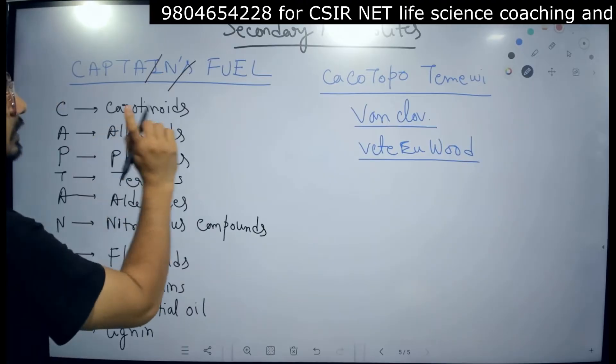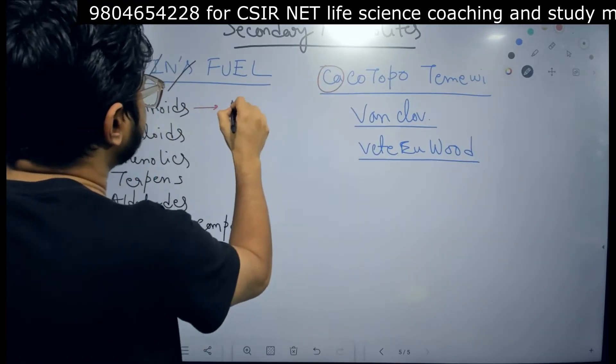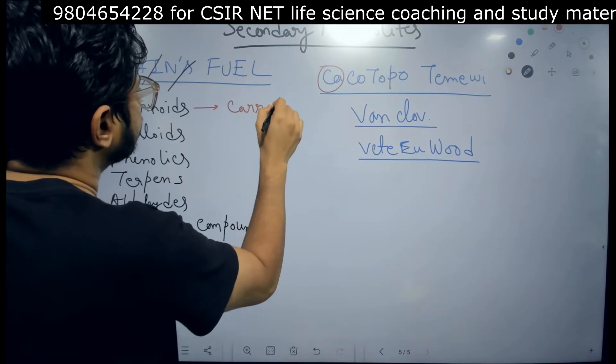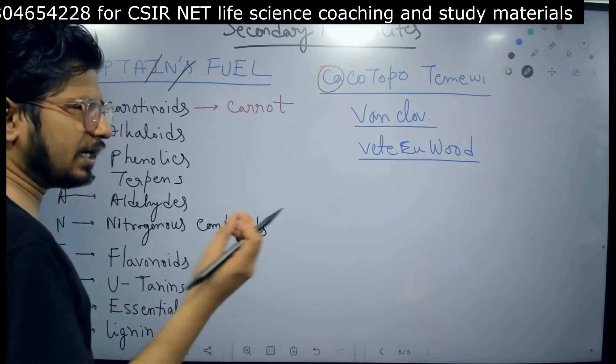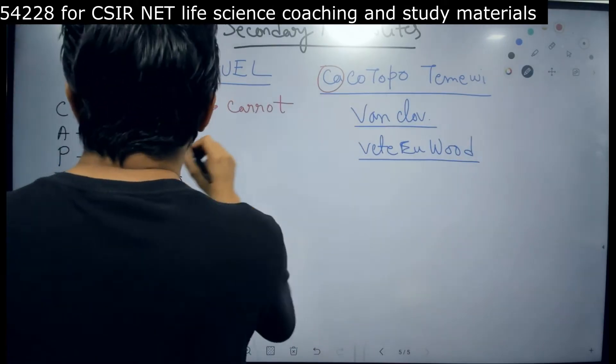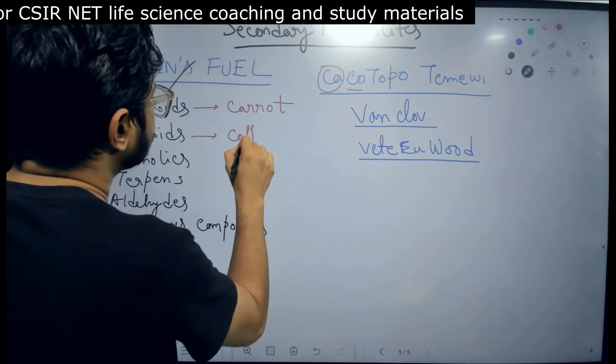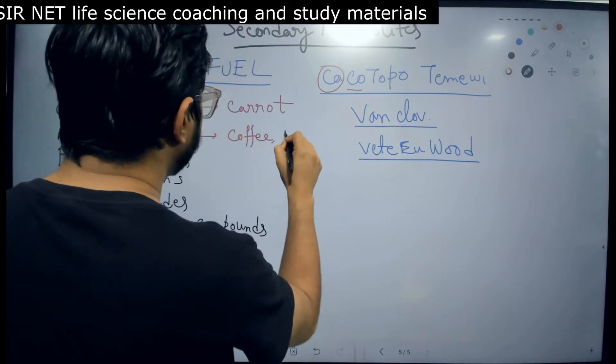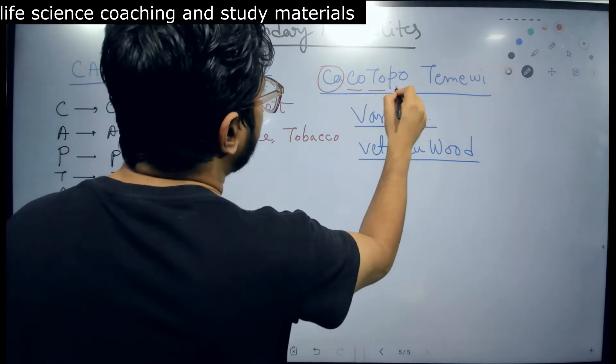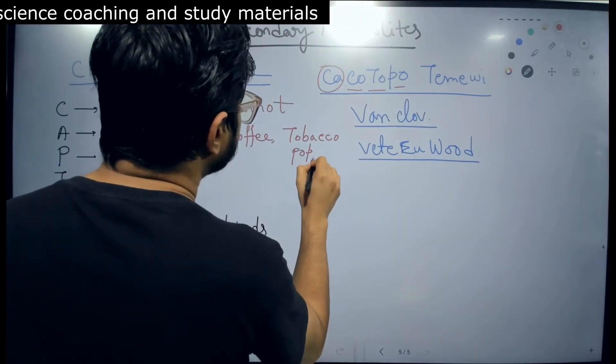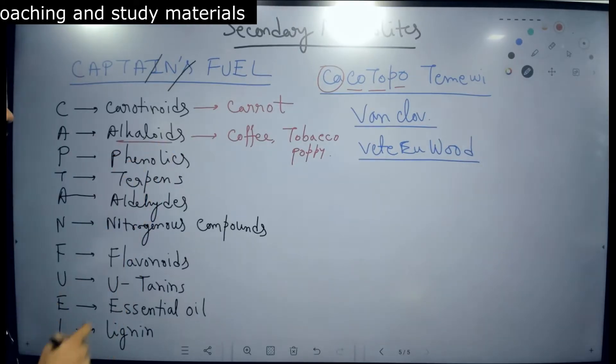Let me tell you this idea, starting with carotenoids. We know carotenoids are very much found in CA for carrot. The next one, alkaloids - there are some examples: CO for coffee, TO for tobacco, and PO for poppy seeds. So coffee, tobacco, poppy all become part of alkaloids.